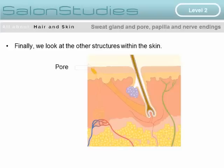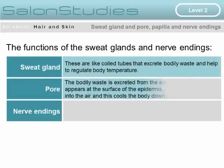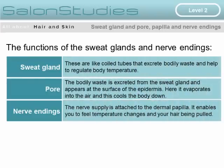In this final diagram we look at the other structures within the skin. We can see the pore, the nerve endings, and the sweat gland. The sweat gland looks like coiled tubes that excrete bodily waste and help to regulate body temperature by emitting sweat. It terminates at the surface of the scalp as a pore, where bodily waste is excreted and appears at the surface of the epidermis. It evaporates into the air, cooling the body down.